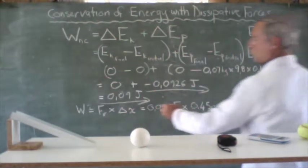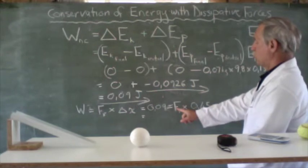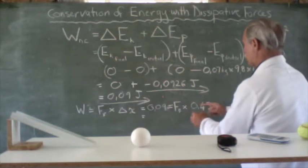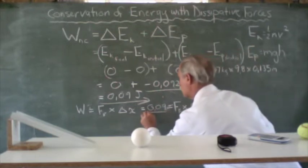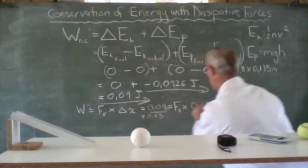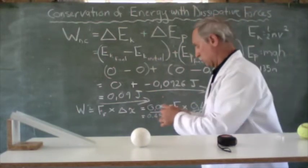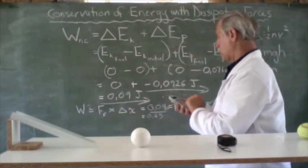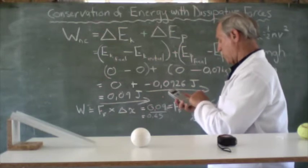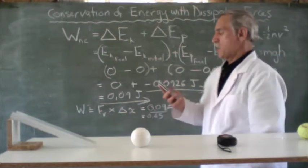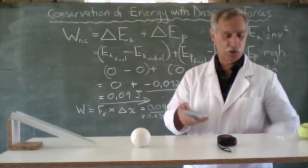And, therefore, we can work it out by finding the frictional force. We divide, we take this to the other side, we divide both sides by 0.45. That cancels out,